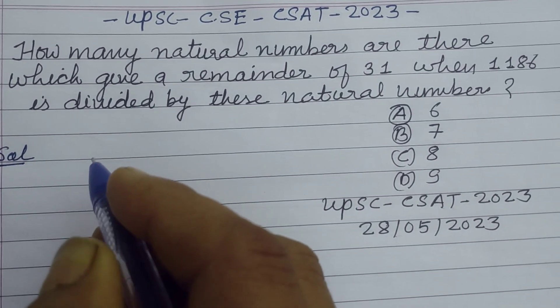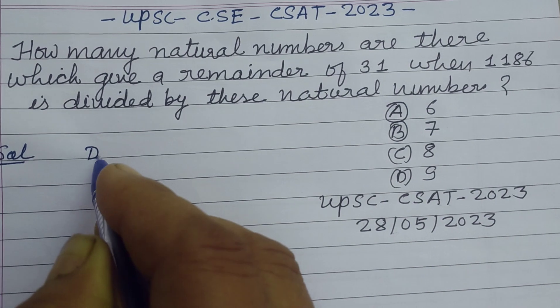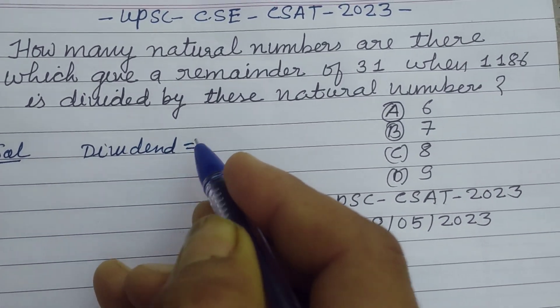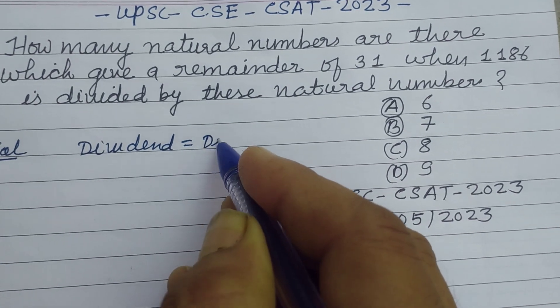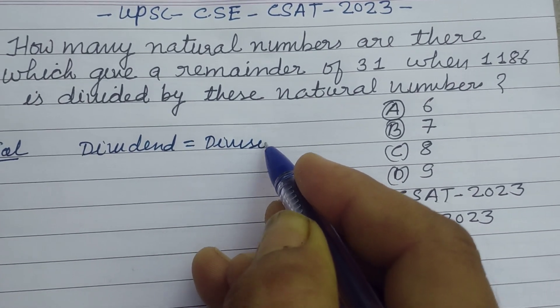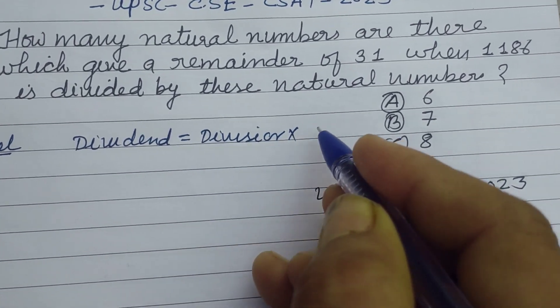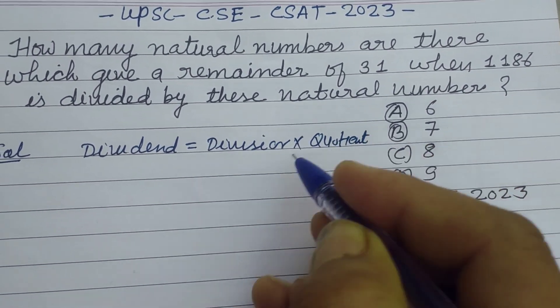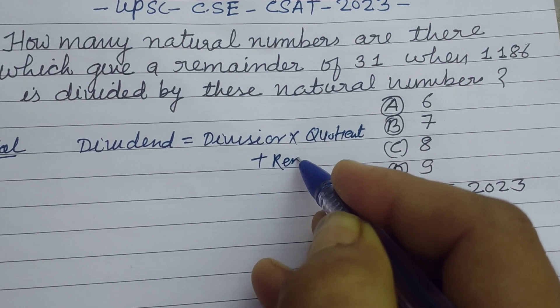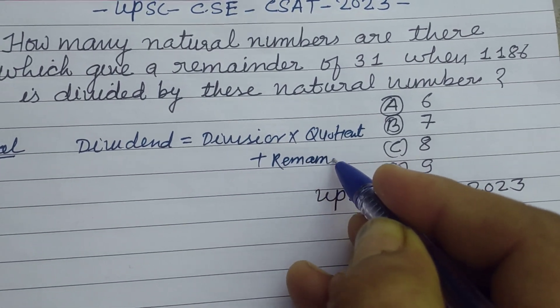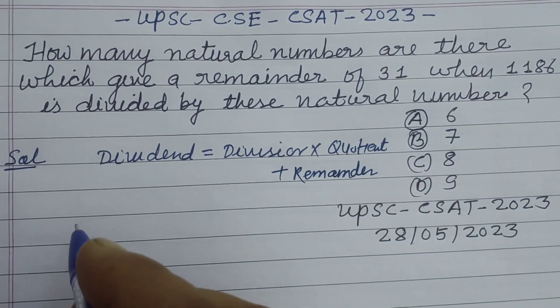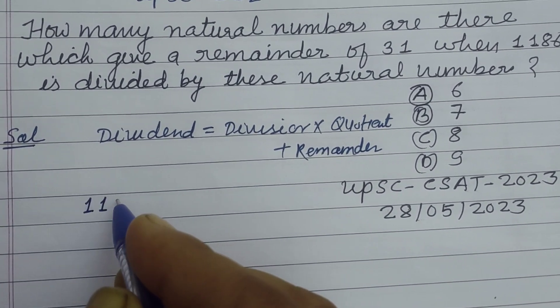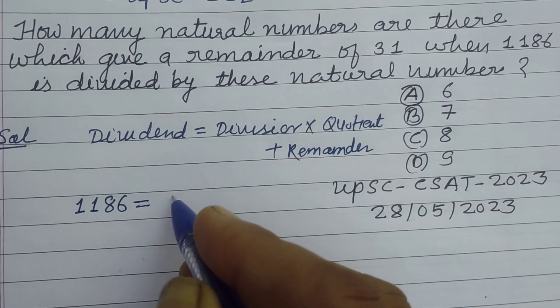So first we know the rule of dividend: dividend equals divisor into quotient plus remainder. So here the dividend is 1186, and divisors are natural numbers N. Let quotient be X, and remainder is given as 31.